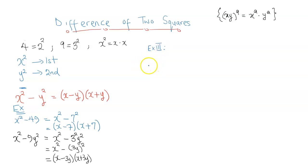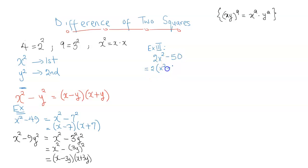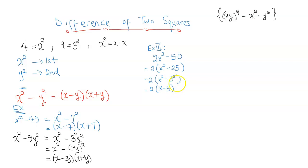A third one, a little bit more complicated: 2x squared minus 50. Here, 2 is neither a perfect square nor is 50, so we cannot immediately apply the difference of two squares. The first thing we have to do is factor out the common factor of 2 and 50, which is 2. So 2x squared divided by 2 is x squared, and 50 divided by 2 is 25. We can see that what's within the parentheses can be resolved using the difference of two squares, since 25 is 5 squared. So the answer is 2 times x minus 5 times x plus 5.